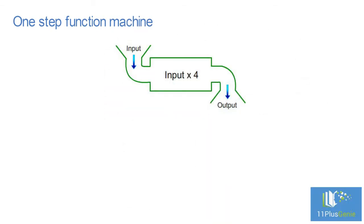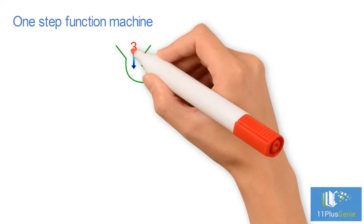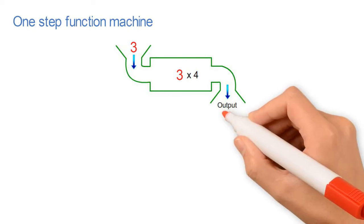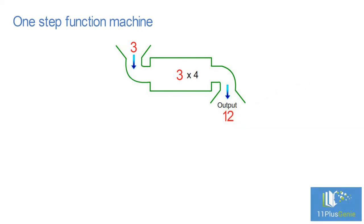The machine asks for an input, then multiplies the input by 4 and gives the answer as output. If the input is 3, the machine multiplies 3 by 4 and gives 12 as an output.